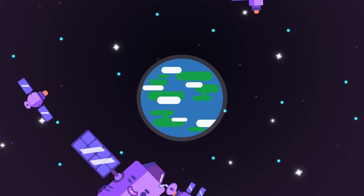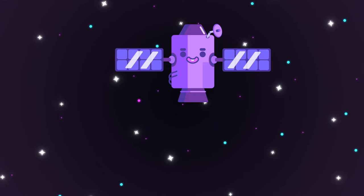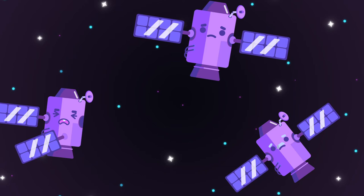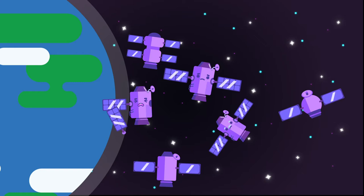But these satellites that we rely on day in and day out have a finite life. They might run out of propellant, they could malfunction, or they may just naturally reach the end of their mission life. At this point, these satellites effectively become space junk, cluttering the orbital environment.